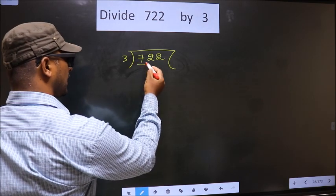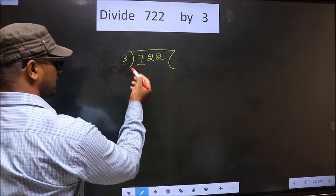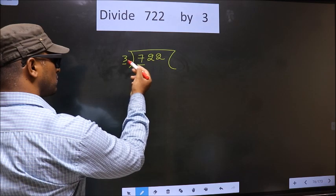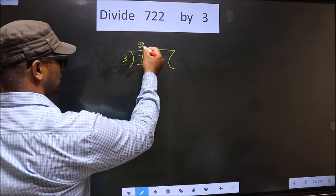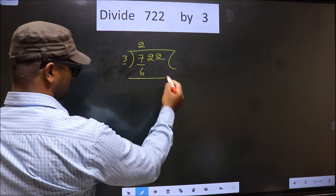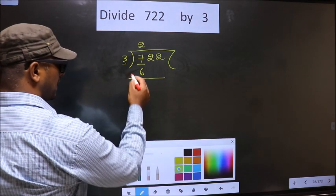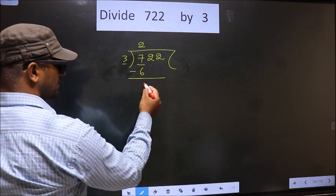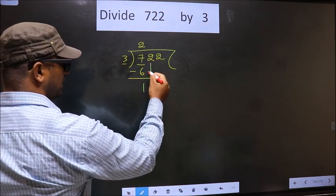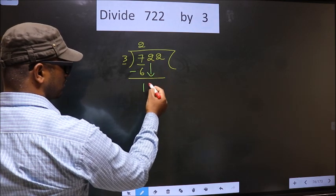Now here we have 7. Here 3. Our number close to 7 in 3 table is 3 times 2, 6. Now you subtract. 7 minus 6, 1. Now you bring down the beside number. So 2 down.